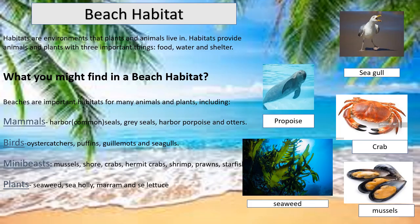Today's comprehension is about beach habitat. Habitats are environments that plants and animals live in. Habitats provide animals and plants with three important things: food, water and shelter.